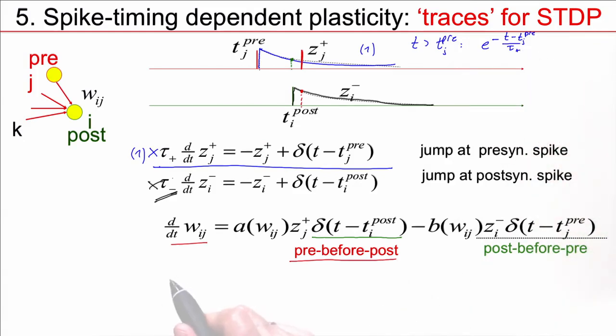Therefore, the weight change that happens at a later time t_post after t_pre is this value here. So, I plug this term in. This is my z^+, which I plug in here. So, I have e^(-(t-t_j^pre)/tau), but I evaluate this at t_post, so it becomes sensitive to the difference of spike timing. And then I copy this term in here, a(w_ij).